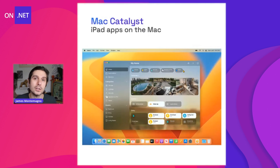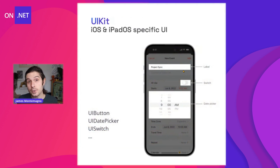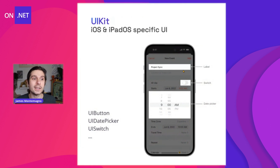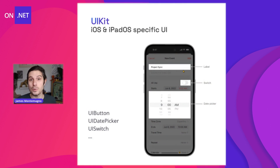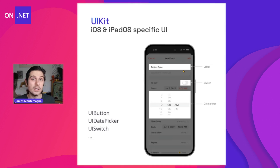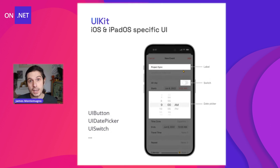Now let's talk about AppKit and UIKit. When you're building iPhone and iPad applications — basically iOS or iPadOS — you're using UIKit. Things like UIButton, UIDatePicker, UISwitch — those are the underlying native controls. When you use .NET MAUI on an iOS or iPad application, when you say button, it will create a UIButton for you automatically under the hood, or UISwitch or UIDatePicker.